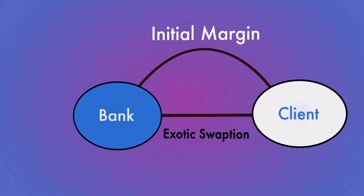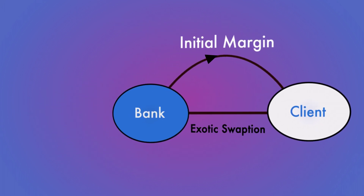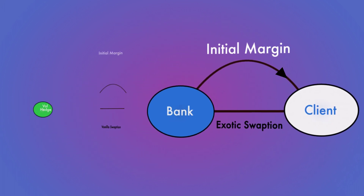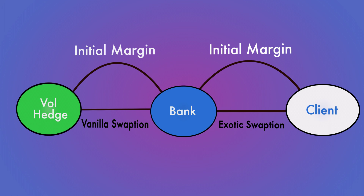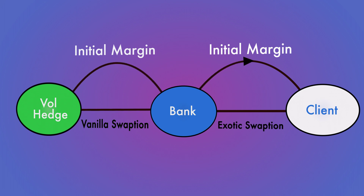But in reality, looking at the bigger picture, we also have hedges. Some of the vega of this position will be hedged out using vanillas, and those vanillas will be trades between the bank and likely another bank — a hedge counterparty. Being swaptions, they are likely not cleared, so they'll attract initial margin also determined by ISDA SIMM.